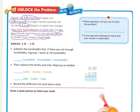We can fill out the blue square: what operation will we use? We will use subtraction. We already have the estimate circled. The first step is to subtract the hundredths first.